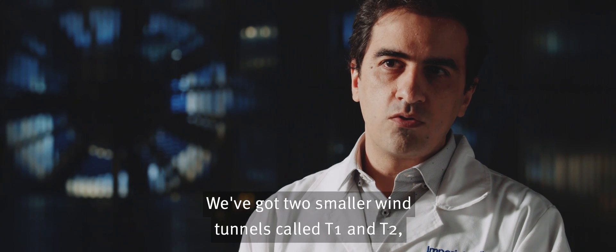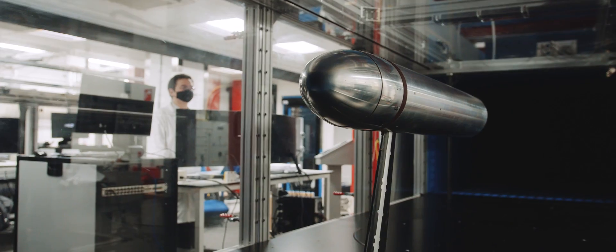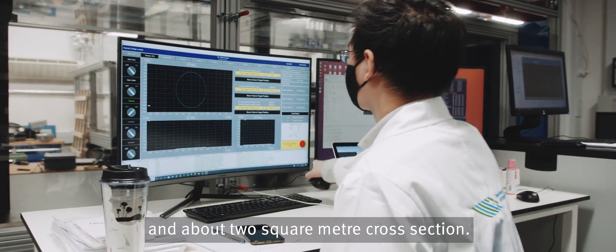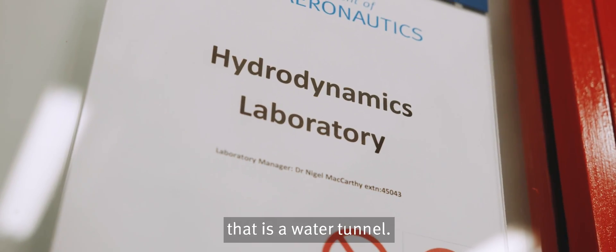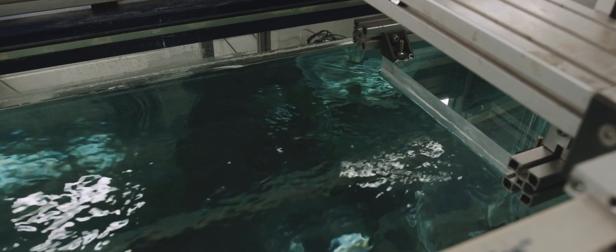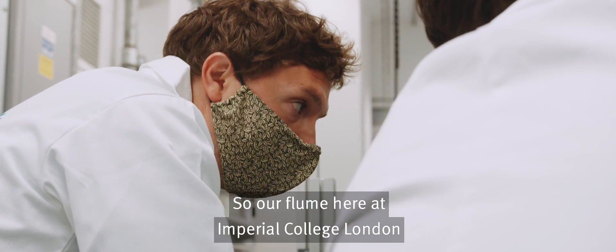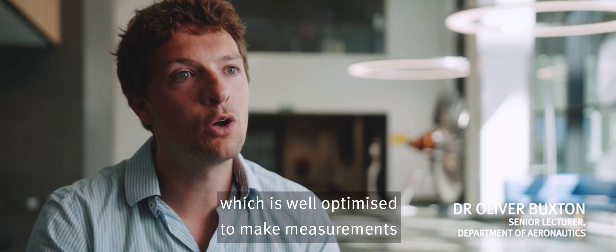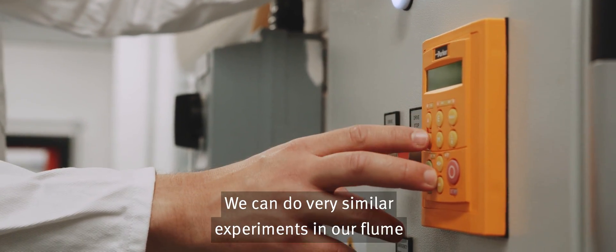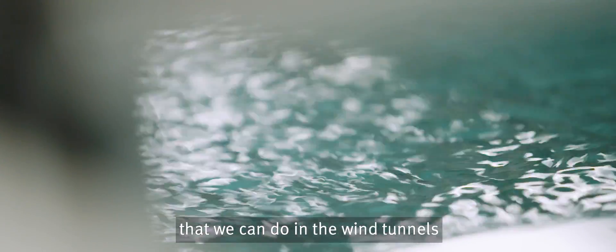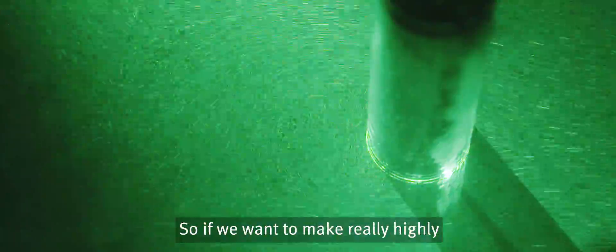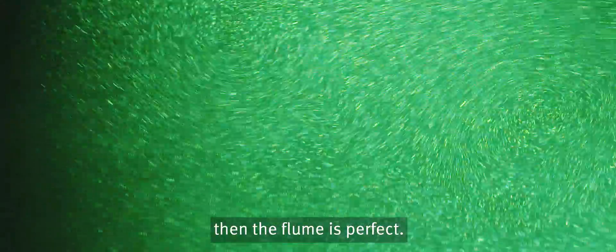We've got two smaller wind tunnels called T1 and T2, one square meter cross-section and about two square meter cross-section. We've got a flume, that's a water tunnel. So our flume here at Imperial College London is a highly flexible facility, which is well optimized to make measurements of both velocity and scalar. We can do very similar experiments in our flume that we can do in the wind tunnels, except effectively we've slowed everything down by ten times. So if we want to make really highly temporally resolved measurements, then the flume is perfect.